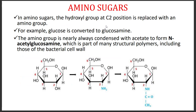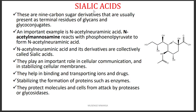We also have amino sugars, where carbon number two of these sugars — mostly six-membered sugars — is replaced by an amine group. When the amine group is present as-is, we call it glucosamine. Mostly the amine group will also attach an acetate group, and we form N-acetylglucosamine. This is important because it is found in bacterial cell walls.